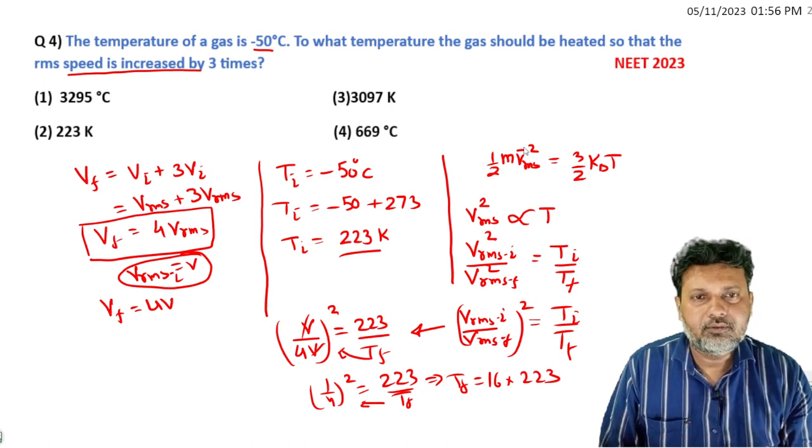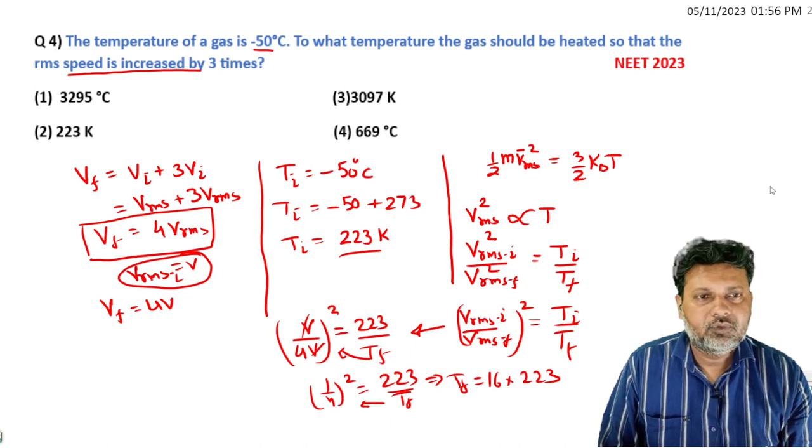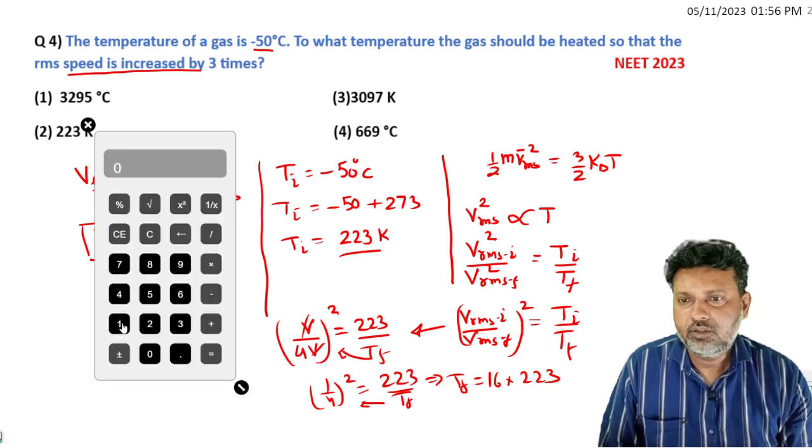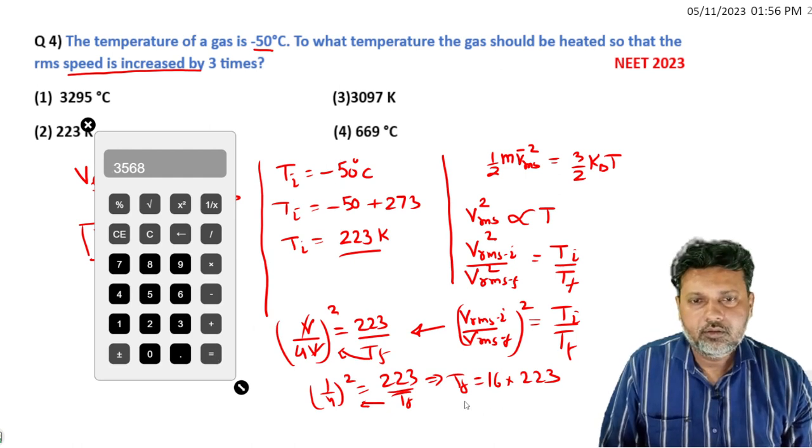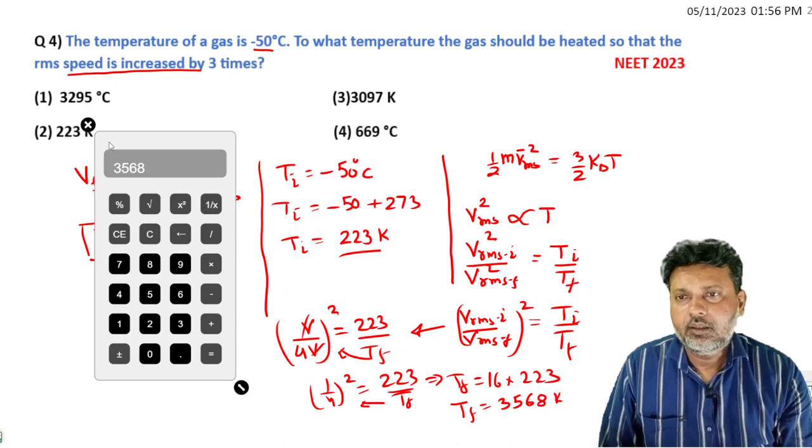Let me take the calculator. 16 into 223 equals 3568.